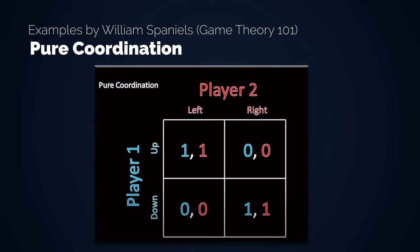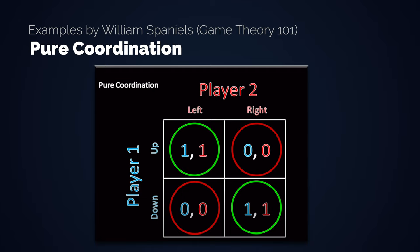There is a game called Pure Coordination. Players get a point each if they select up-left or down-right at the same time. Anything in between or different choices from the players result in zero points. The correct options are called Pure Strategy Nash Equilibria. The question is: how do the players choose the same strategy, because there are two different ones that both lead to the same correct results?